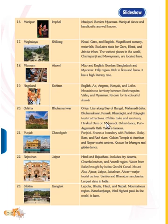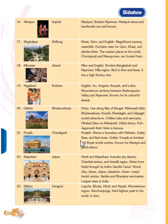Now let's come down with Punjab. The capital is Chandigarh and the language spoken here is Punjabi. It shares the boundary with Pakistan. The Sutlej, Beas, and Ravi rivers flow from this area. It is mostly famous for the Golden Temple at Amritsar and Ropar tourist centers.